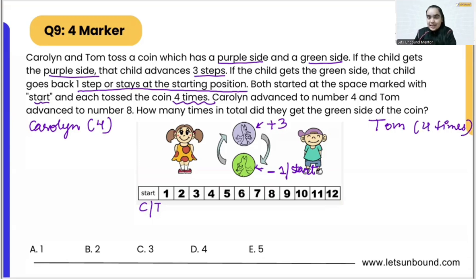Caroline advanced to number four. That means in the end, after tossing four times, Caroline is at number four and Tom is at number eight. So how many times in total did they get the green side of the coin?